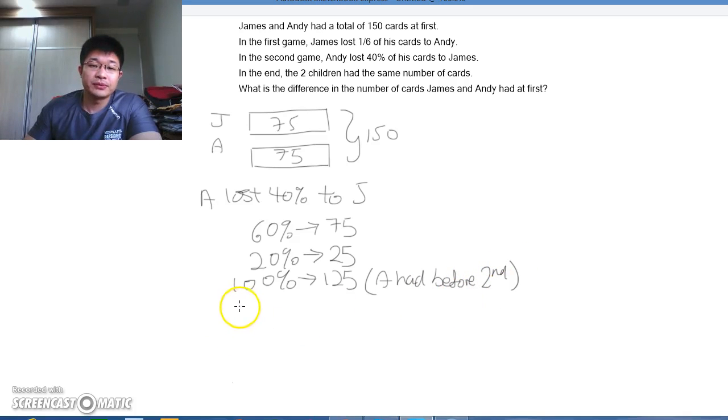And this will also mean that J would be having 25 cards because it's a total of 150-125, you get 25. So this is what happens after the first game.